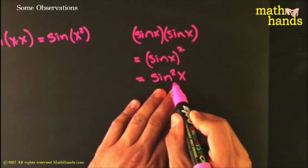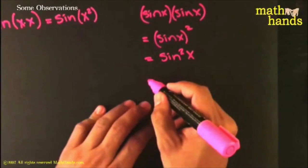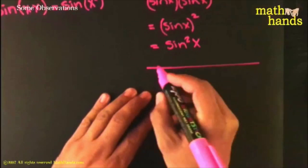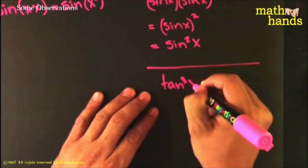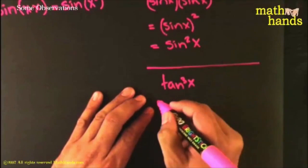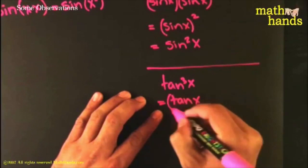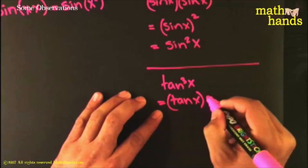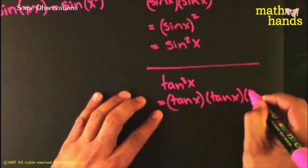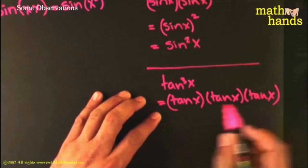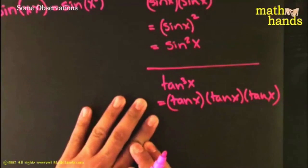There's nothing special about just sine - for example, tan³(x). You should know exactly what that means: when people write that, they're talking about tan(x) times tan(x) times tan(x). That is exactly what people are referring to when they write tangent to the third power of x.